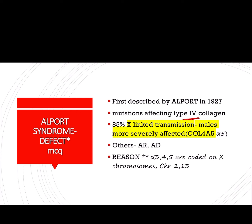Type 4 collagen forms the superstructure of the glomerular basement membrane. When there are mutations in the alpha chains of this collagen, it results in Alport syndrome. In Alport syndrome, the types of transmission that can be seen are X-linked, autosomal recessive, and autosomal dominant. So many different types of transmission exist because the alpha chain genes are present on both the X chromosome as well as autosomes 2 and 13.